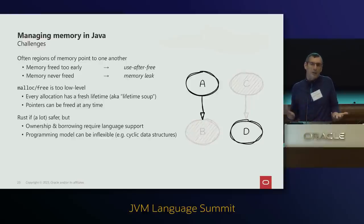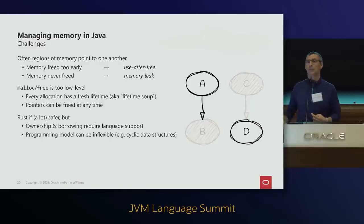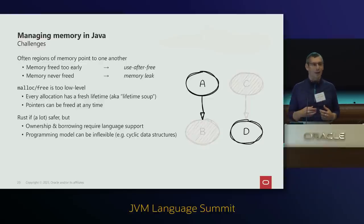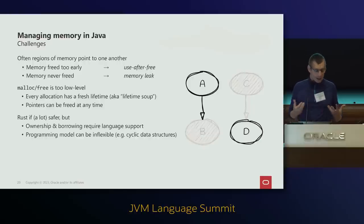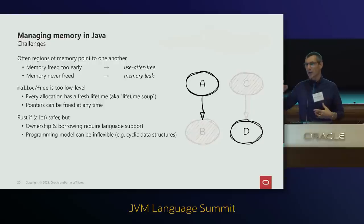If one part of the application allocates memory and a second totally unrelated part has access to the pointer, it can free it — there's no control. Rust is a lot safer but requires language changes to support borrowing and ownership, and some idioms like implementing a binary tree or linked list have many gotchas. So Java sits in a sweet middle between the flexibility but unsafety of C and the safety but reduced flexibility of Rust.